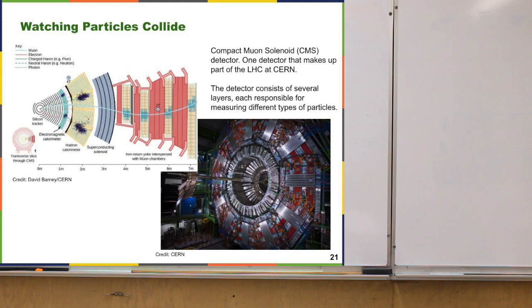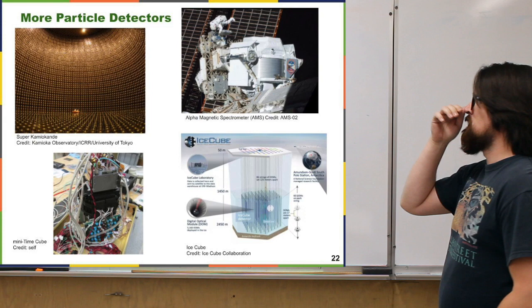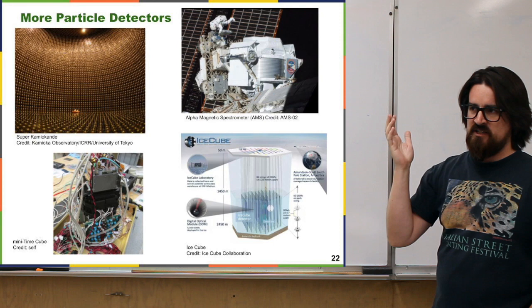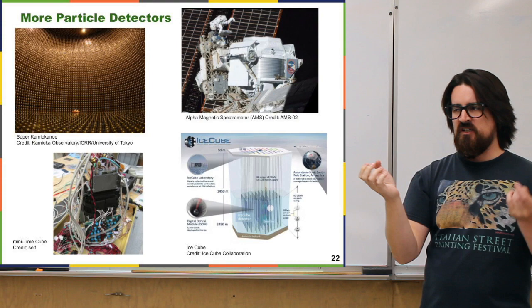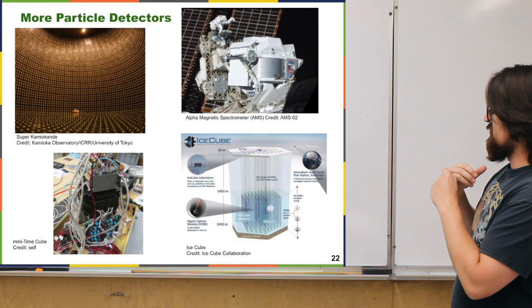I didn't want to leave out other kinds of particle detectors. The book may not really even mention things beyond particle accelerators and colliders, but there are plenty of ways to do particle physics without needing accelerators and colliders. Mainly to do with what you might call passive detectors, where you're mostly building something that's going to detect stuff that just is naturally around.